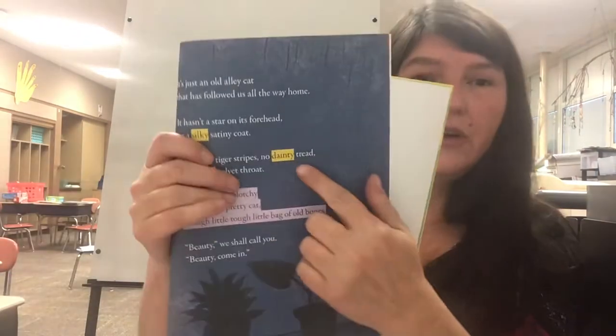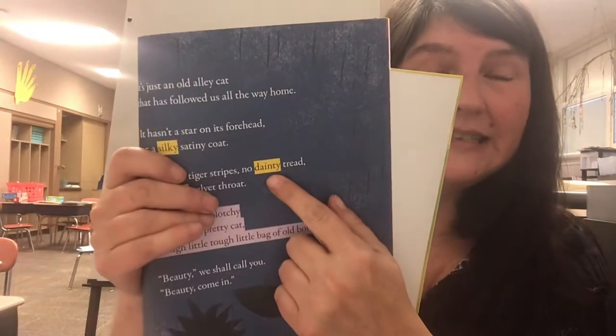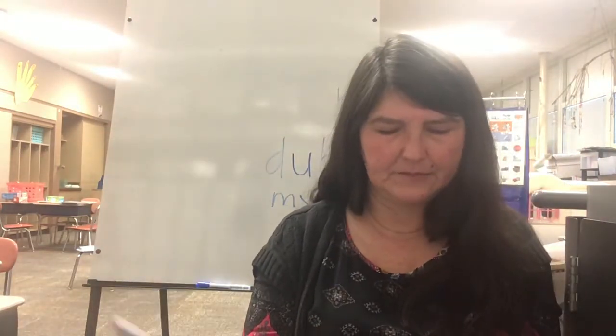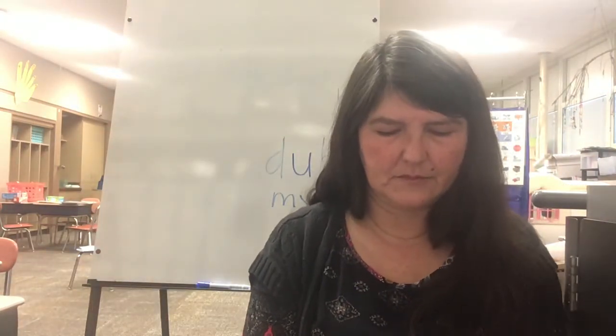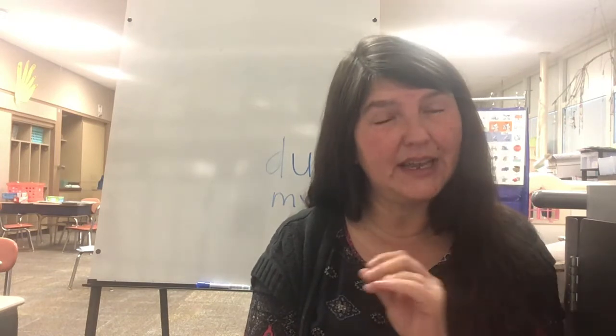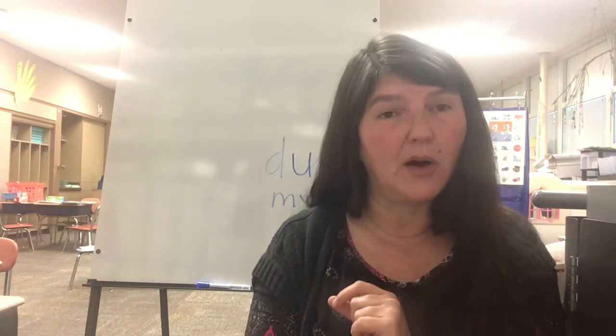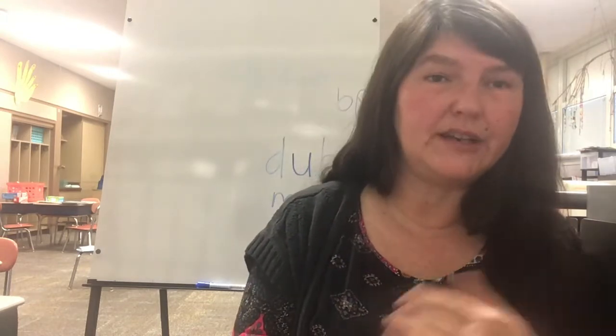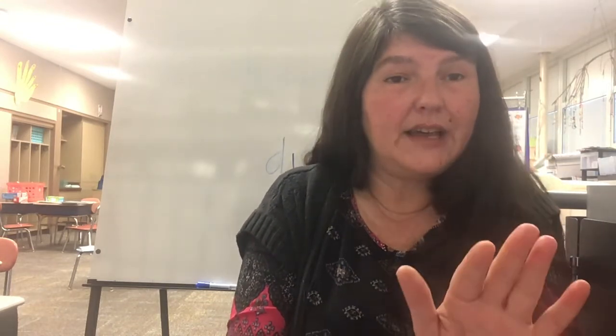The next word, the yellow one, is dainty. Something that's dainty is pretty and small. So if it has dainty tread — tread is like steps — think about what a cat might look like.